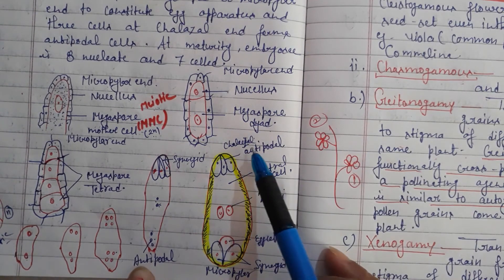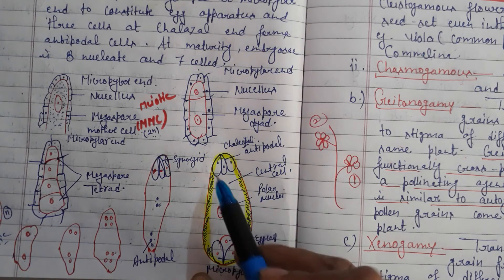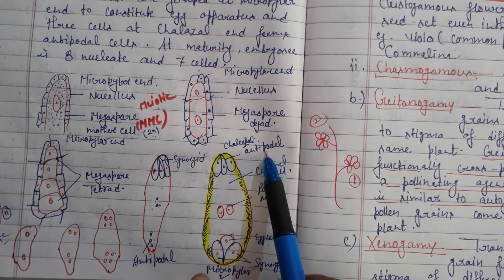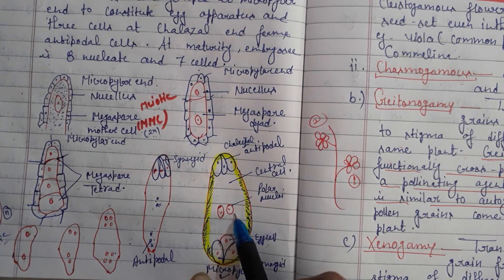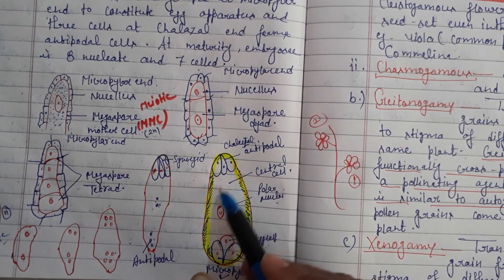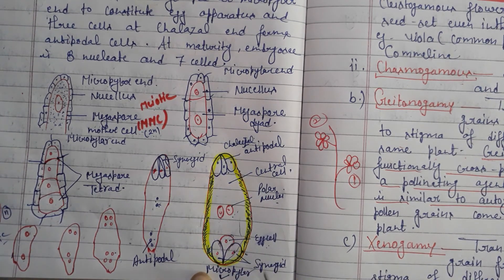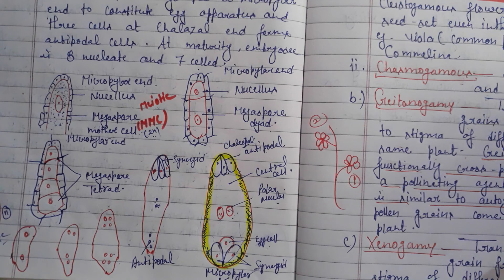In the final embryo sac structure: at the micropyle end, 3 cells form the egg apparatus — including the egg cell. At the chalazal end, 3 cells form the antipodal cells. The 2 remaining nuclei move to form the polar nuclei in the large central cell. This gives a total of 7 cells and 8 nuclei — the 8-nucleate 7-cell structure.